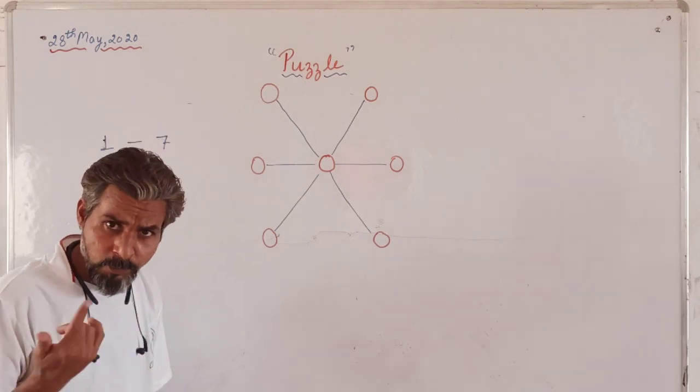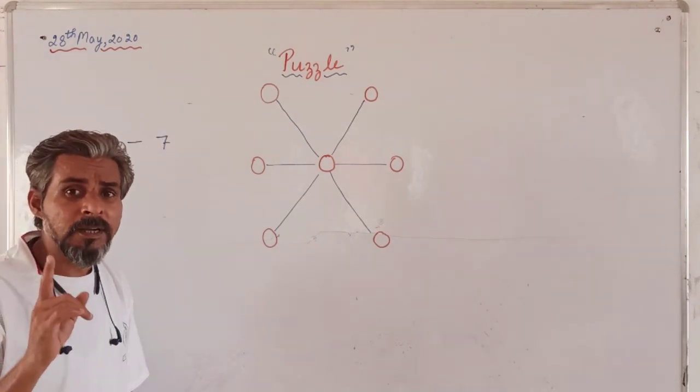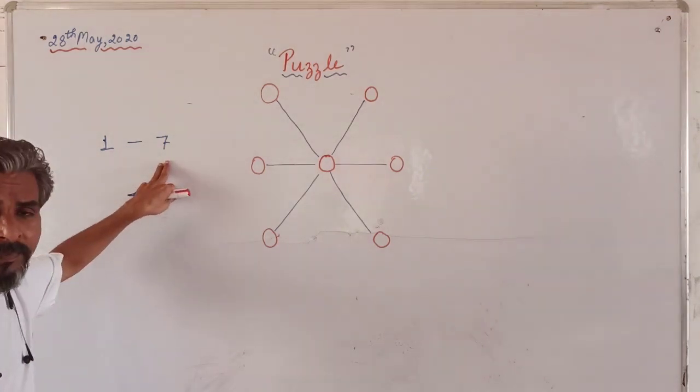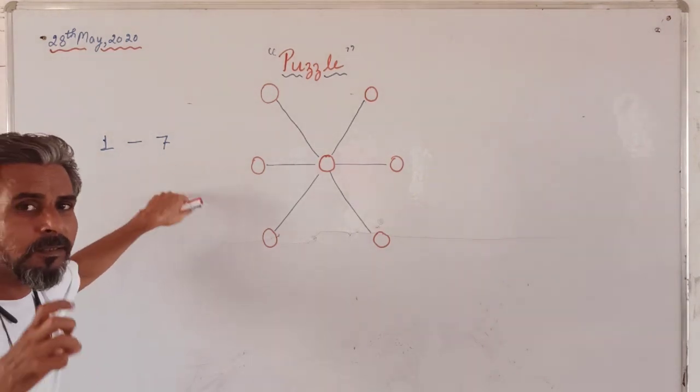I want to repeat one more time. We can use the numbers from 1 to 7, and we are going to use each number once.